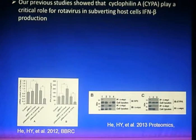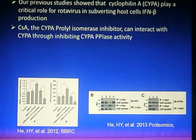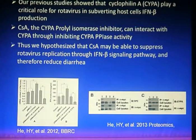Cyclosporin A, the cyclophilin A inhibitor, can interact with cyclophilin A through inhibiting cyclophilin A's activity. Thus, we hypothesized that cyclosporin A may be able to suppress rotavirus replication through the interferon beta signaling pathway and therefore reduce the infection.